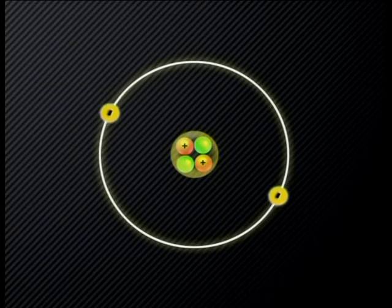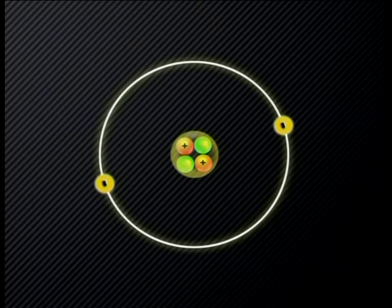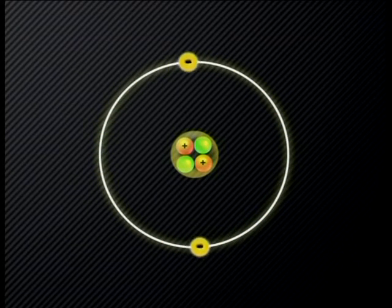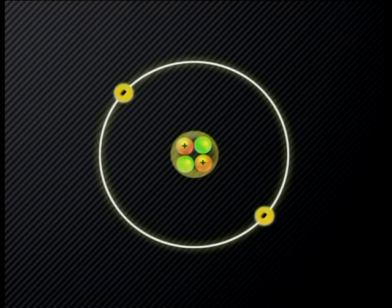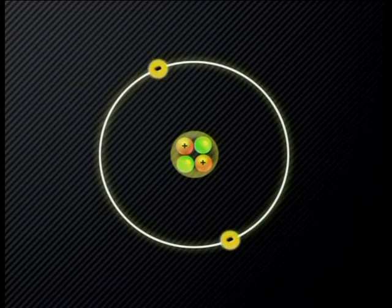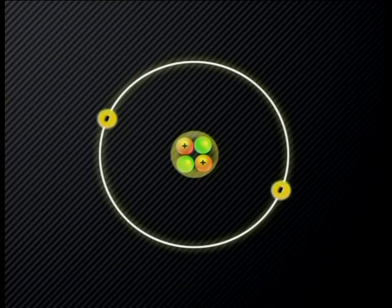Let's look at the structure of the atom again to see if we can find some clues. Remember, all matter contains an equal number of positively and negatively charged particles. This is because all atoms have an equal number of positively charged protons and negatively charged electrons. The protons are found in the nucleus of the atom, but the electrons move around the nucleus in different energy levels.